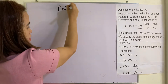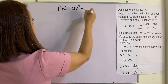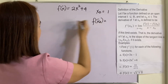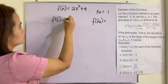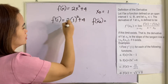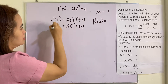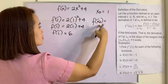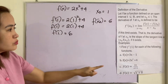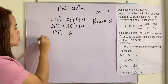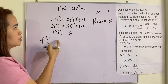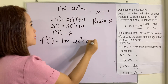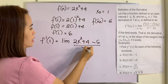Example B: f of x is equal to 2x squared plus four. Our x sub zero is of course one. Let's find f of x sub zero: f of one is equal to two times one squared plus four, which is two times one plus four, giving us six. So f of x sub zero equals six. Using the definition, f prime of one is equal to the limit of 2x squared plus four minus six over x minus one as x approaches one.